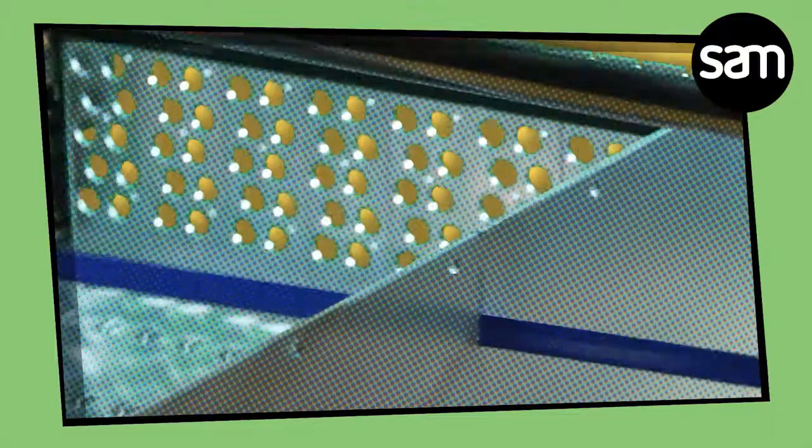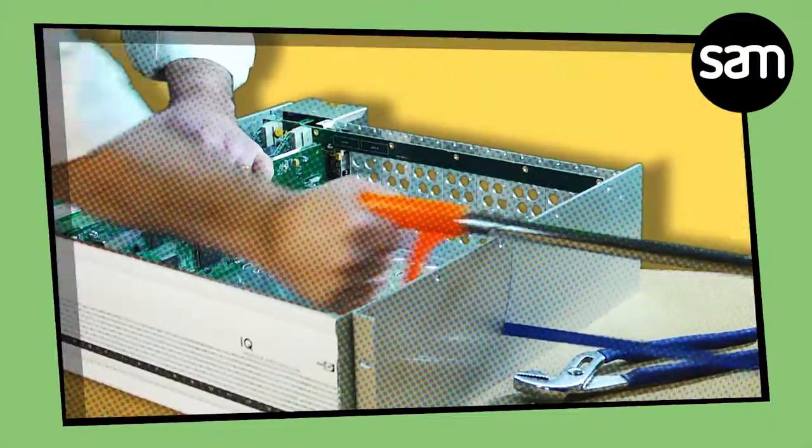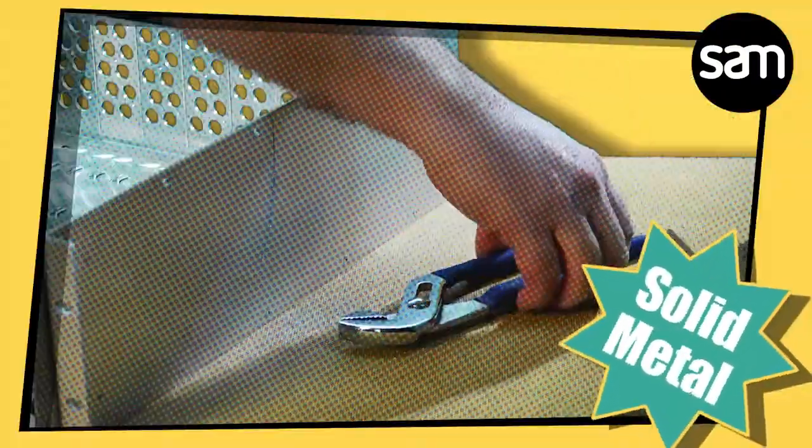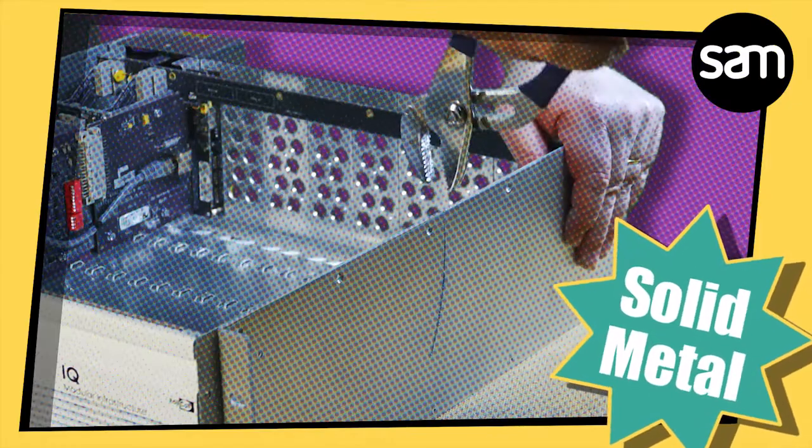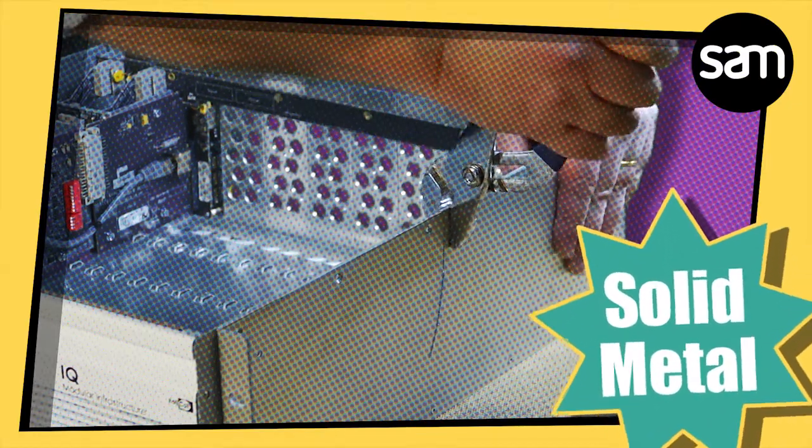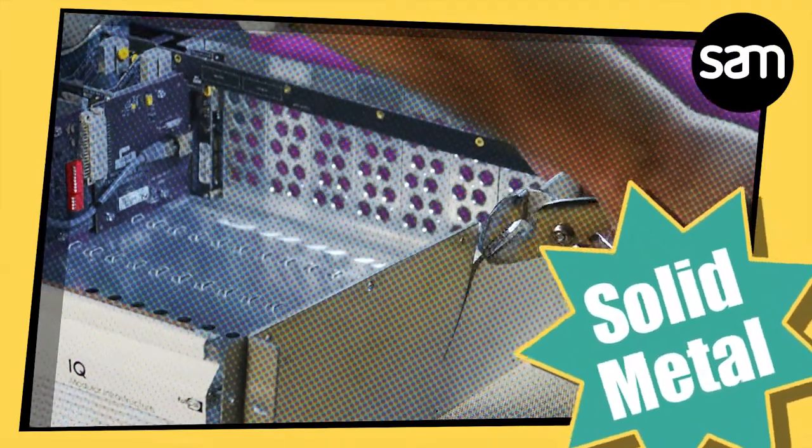Every SAM rack mount chassis is made of solid metal. If you take a saw to one, you'll see that the metal goes all the way through. Because here at SAM, we don't use cheap substitutes.